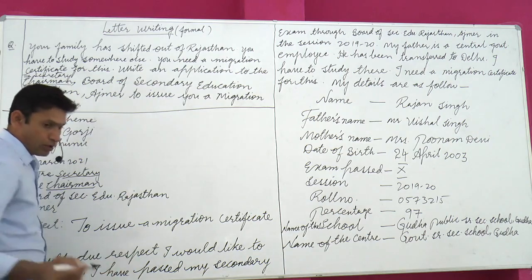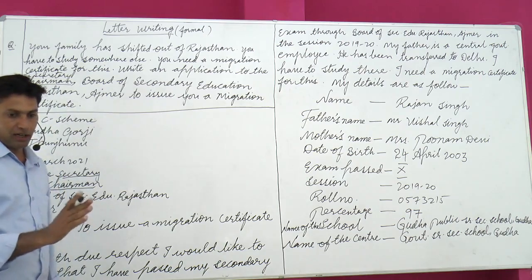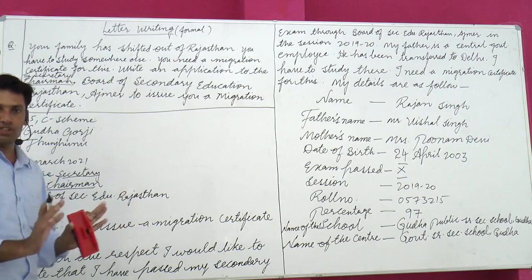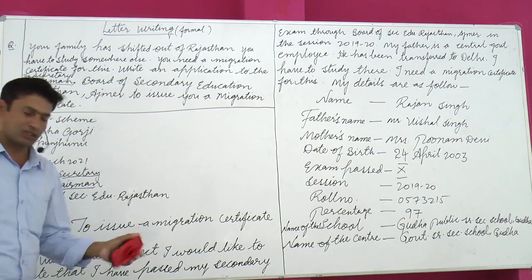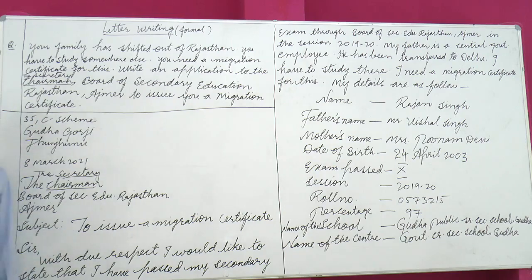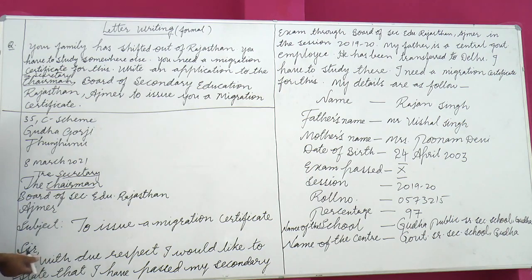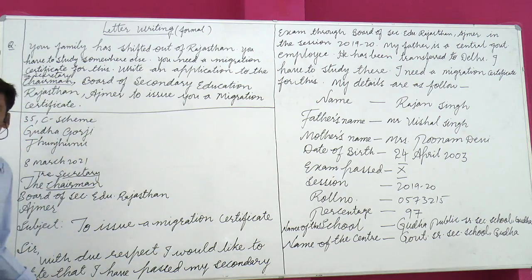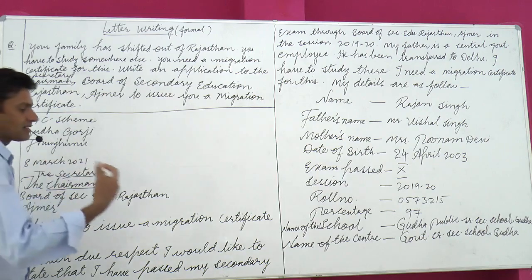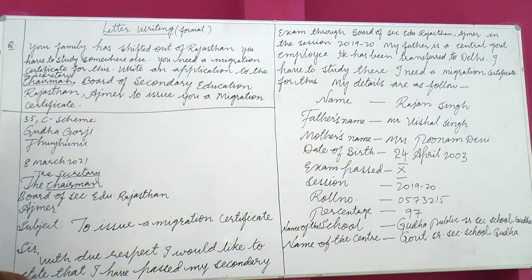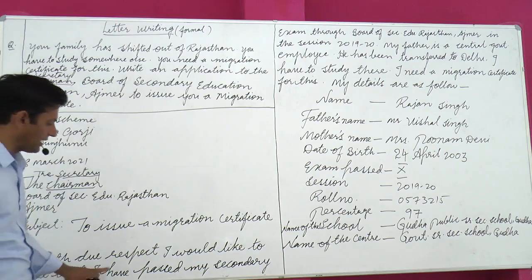With due respect — this is how official letters are started. Letters to editors have a different opening, but for official letters you can vary the start. Start with: 'With due respect, I would like to state that...' State means to say or inform. 'I would like' uses 'would' as a modal verb to express a polite wish. Meaning: I want to say that / I want to inform you that.